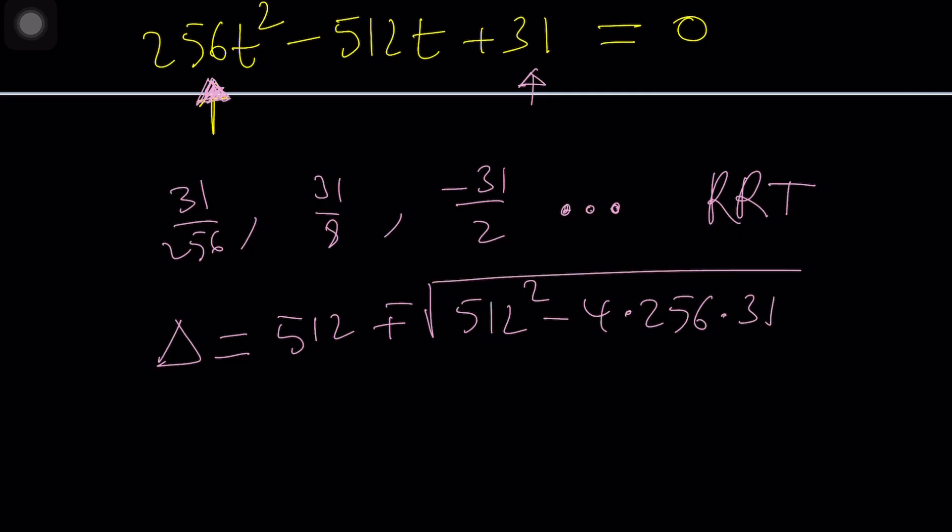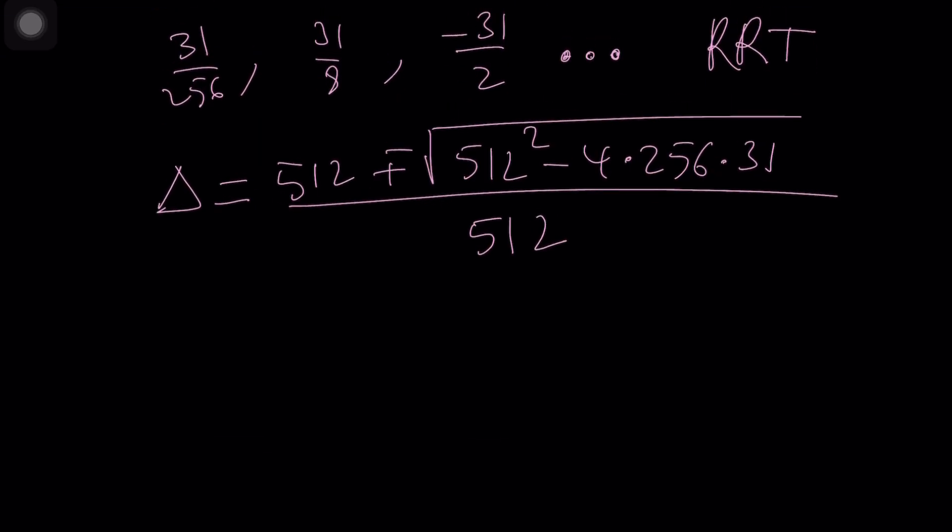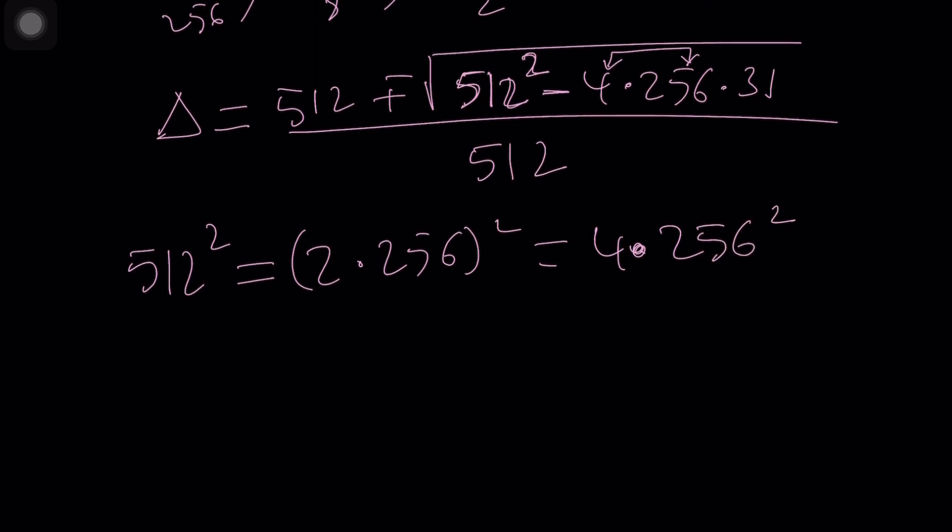One thing that might make this problem easier is that 512 is 256 times 2, so these two actually give me 2 times 16 squared which is 32 squared so we might find common factors. So 512 squared can be written as 2 times 256, if you square that you're going to get 4 times 256 squared.